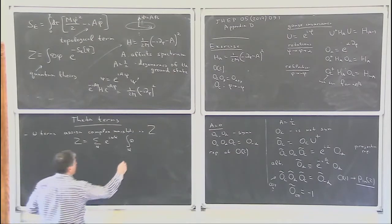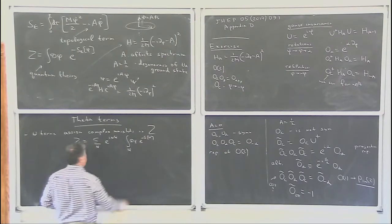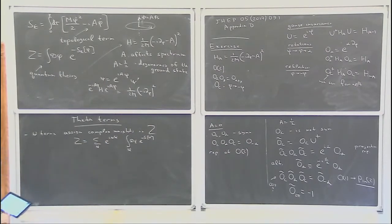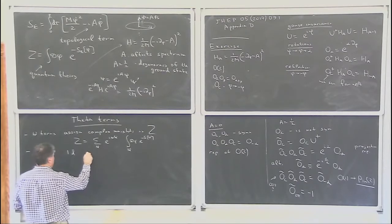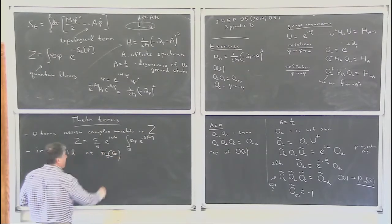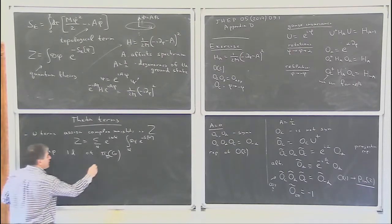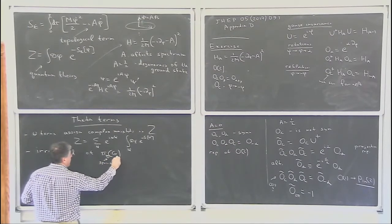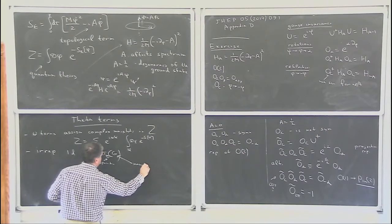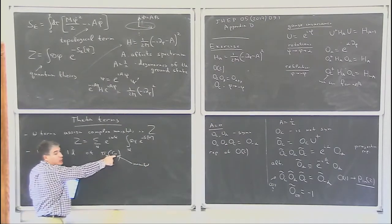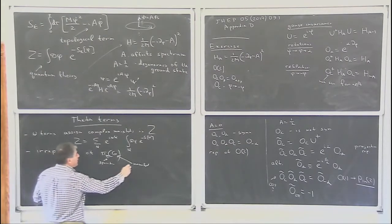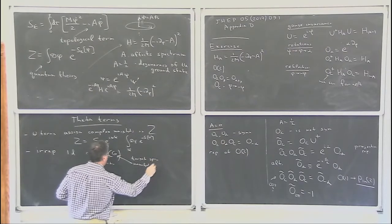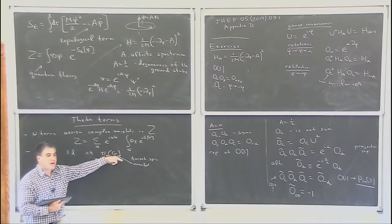Even in Euclidean formulation, these are complex weights. The theta term realizes irreducible one-dimensional representations of the homotopy group of the d-dimensional space-time manifold of your field. In our case it was pi_1(S^1) because we had one-dimensional time and a one-dimensional circle as the target space — what we call the manifold of the field.